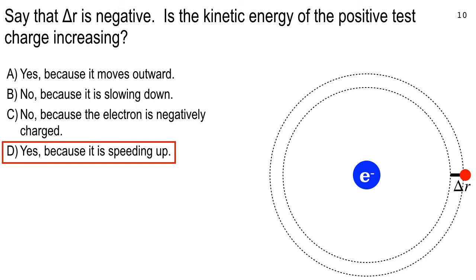Most of you got this one right. It's speeding up because a positive test charge is going to get attracted towards the electron. That means, at least if it starts from rest, it's going to gain velocity.